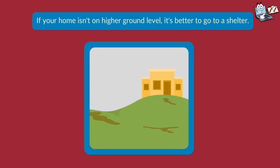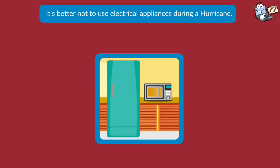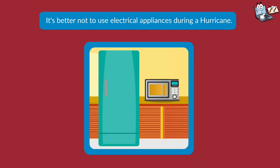If your home isn't on higher ground, it's better to go to a shelter. It's better not to use electrical appliances during a hurricane.